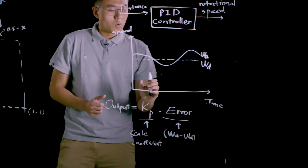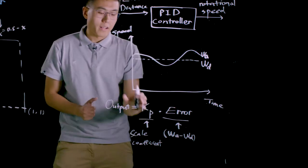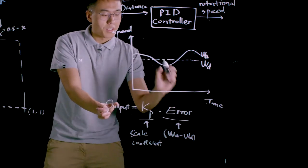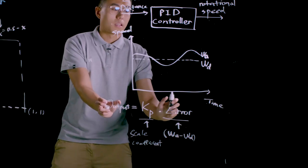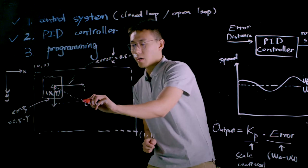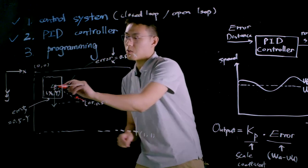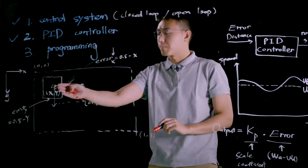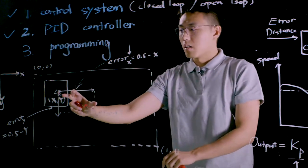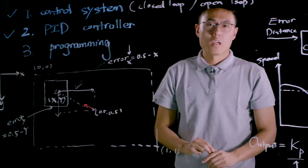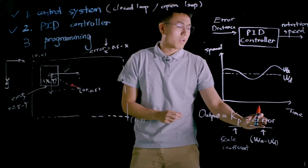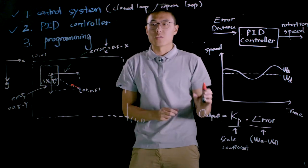We call it proportional control because the final output is proportional to the error if the Kp is fixed. And the greater the error is, the greater the output will be. In this project, when the center of viewport is approaching to the desired position, which is the center of the visual marker, the error distance is actually decreasing. And at the same time, the rotational speed of motor is dropping as well. During this process, the function of P control is to amplify the error and convert it into the output of rotational speed.